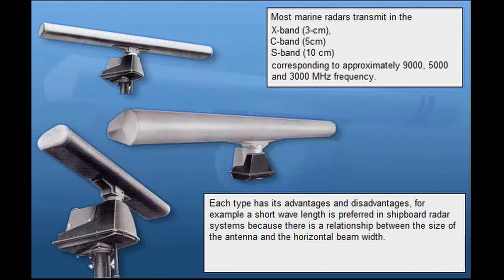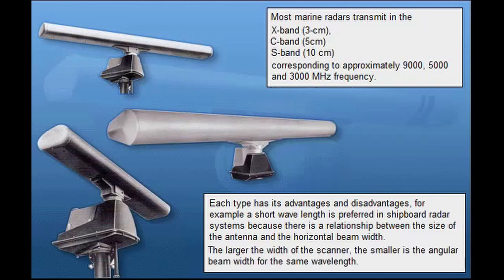For example, a short wavelength is preferred in shipboard radar systems because there is a relationship between the size of the antenna and the horizontal beam width. The larger the width of the scanner, the smaller is the angular beam width for the same wavelength.